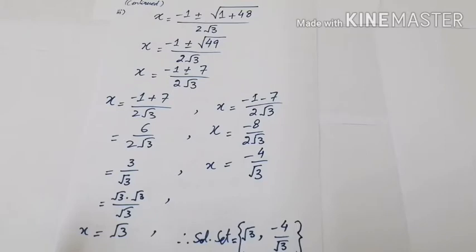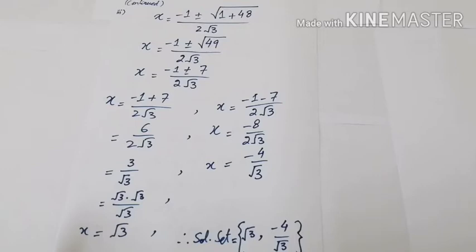Taking both options: x = (−1 + 7) / (2√3) = 6 / (2√3) = 3/√3. Since 3 = √3·√3, one √3 cancels with the denominator, giving x = √3. For the second option: x = (−1 − 7) / (2√3) = −8 / (2√3) = −4/√3. Hence the solution set is {√3, −4/√3}.